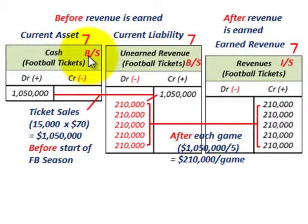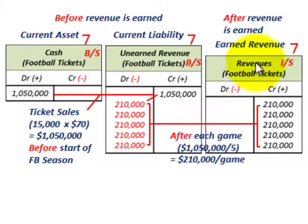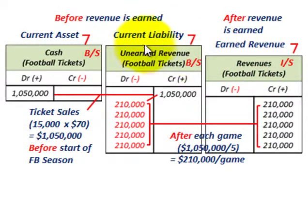These unearned revenue and cash accounts are both on our balance sheet — cash as a current asset and unearned revenue as a current liability. But then we have this third account: a revenues account, again identified for football tickets, but this one is on our income statement. This revenues account is what we'd be looking at after the revenue is earned — that would be called an earned revenue account. Whereas before the revenue is earned, we have the unearned revenue account, and we have received the cash.